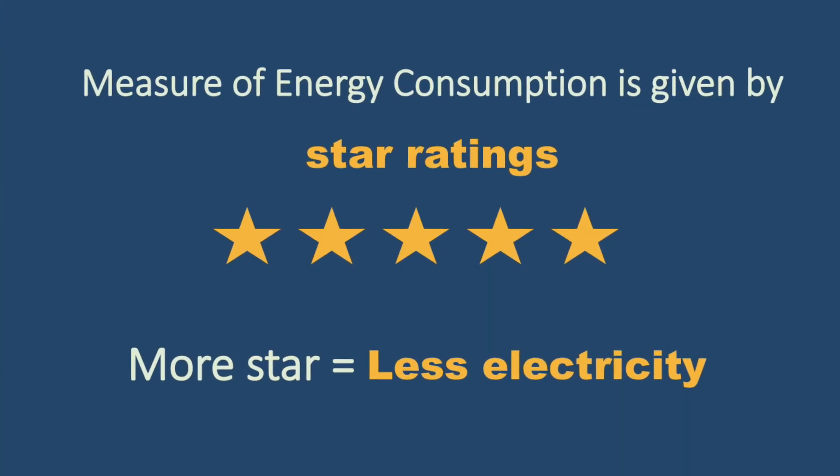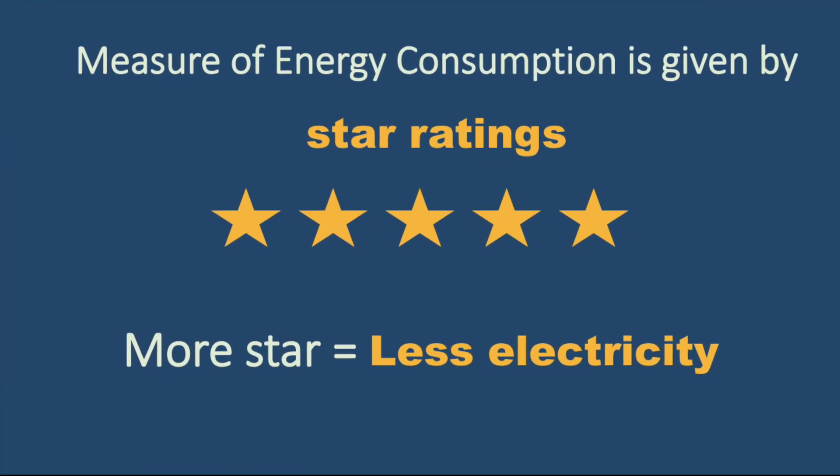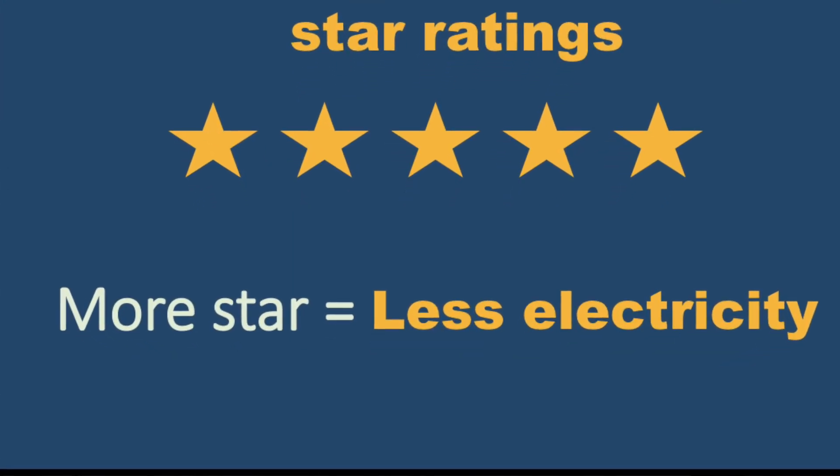In India, the agency which gives the star rating is called the Bureau of Energy Efficiency, which comes under the Government of India. This star rating is given to appliances so that people can directly figure out efficiency from it. A higher star rating means a more efficient appliance. The rating goes from 1 star to 5 star — a 5-star appliance is more efficient than a 2-star appliance, takes less power, and consumes less energy.